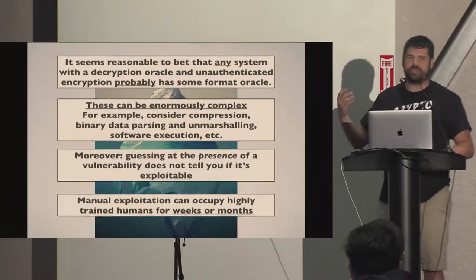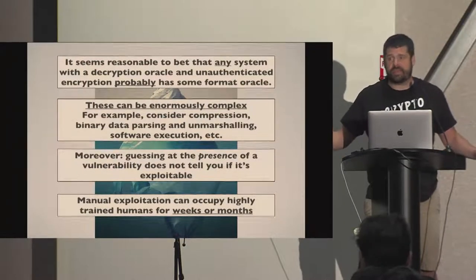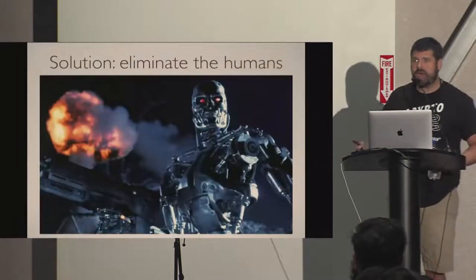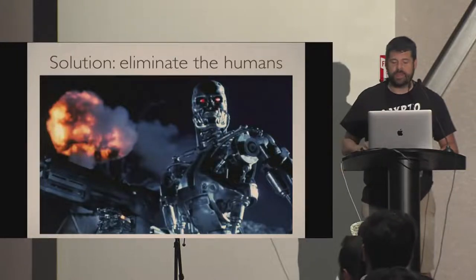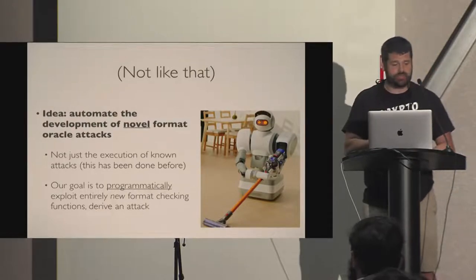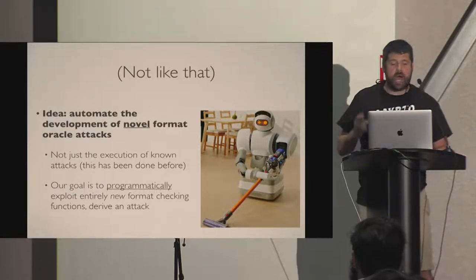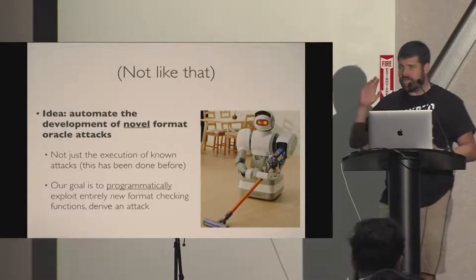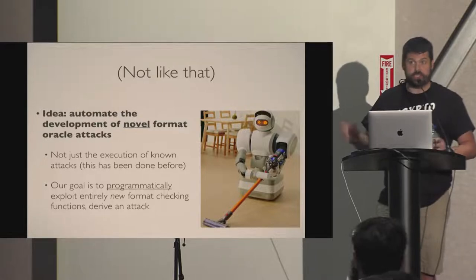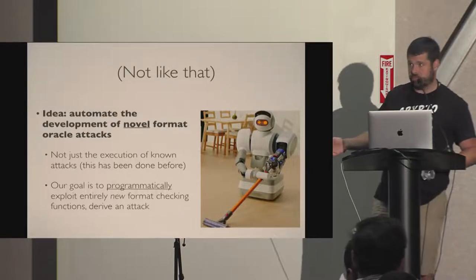Any protocol that's not properly authenticating encryption or is vulnerable to nonce-reuse attacks is almost certainly vulnerable to some kind of format oracle attack. You'd have to dig down into the code — it might involve compression and proprietary binary format unmarshalling. The question is: how easy is it to exploit? That can take months for human beings to figure out. We have really smart people spending time poking at these protocols when we shouldn't — computers should be doing that. So the solution is to build machines that can actually help us do exploitation. We want to automate the development of novel format oracle attacks.